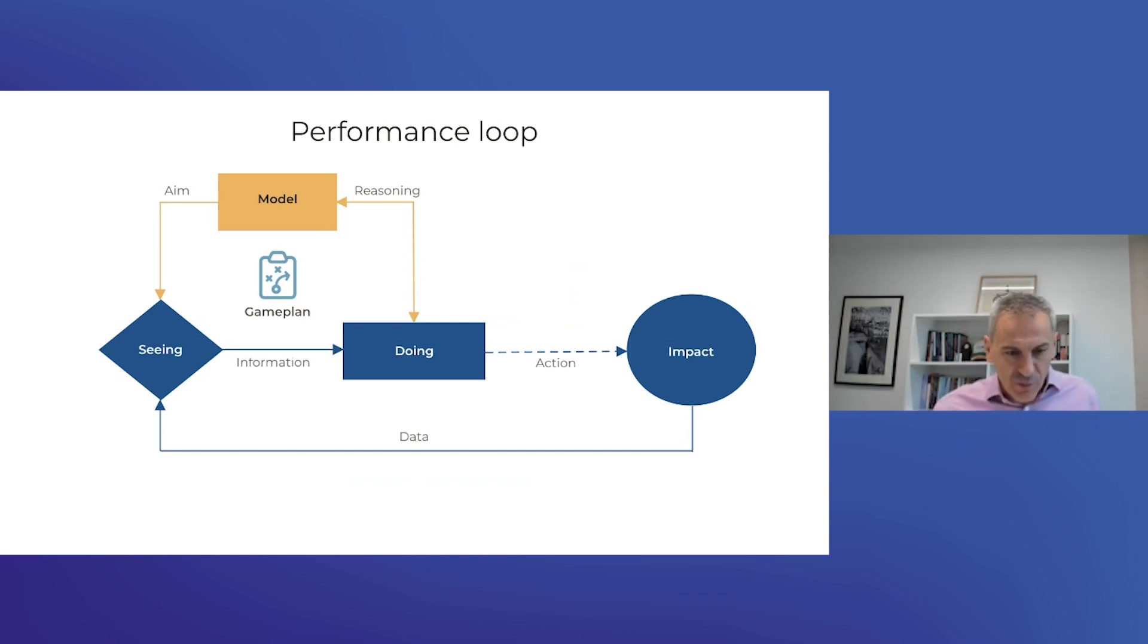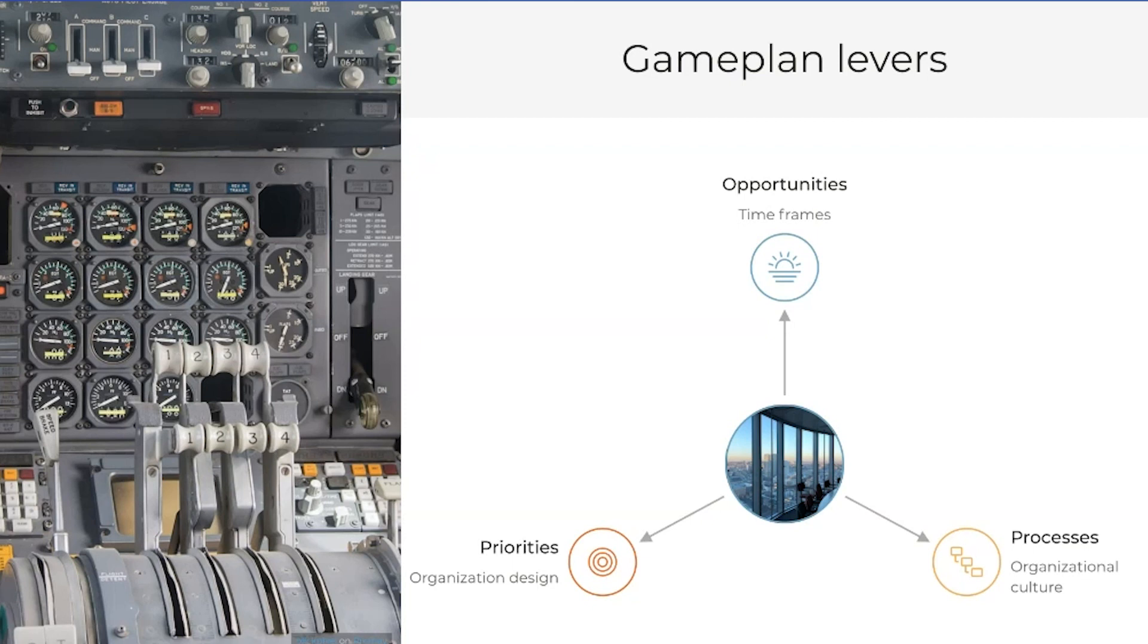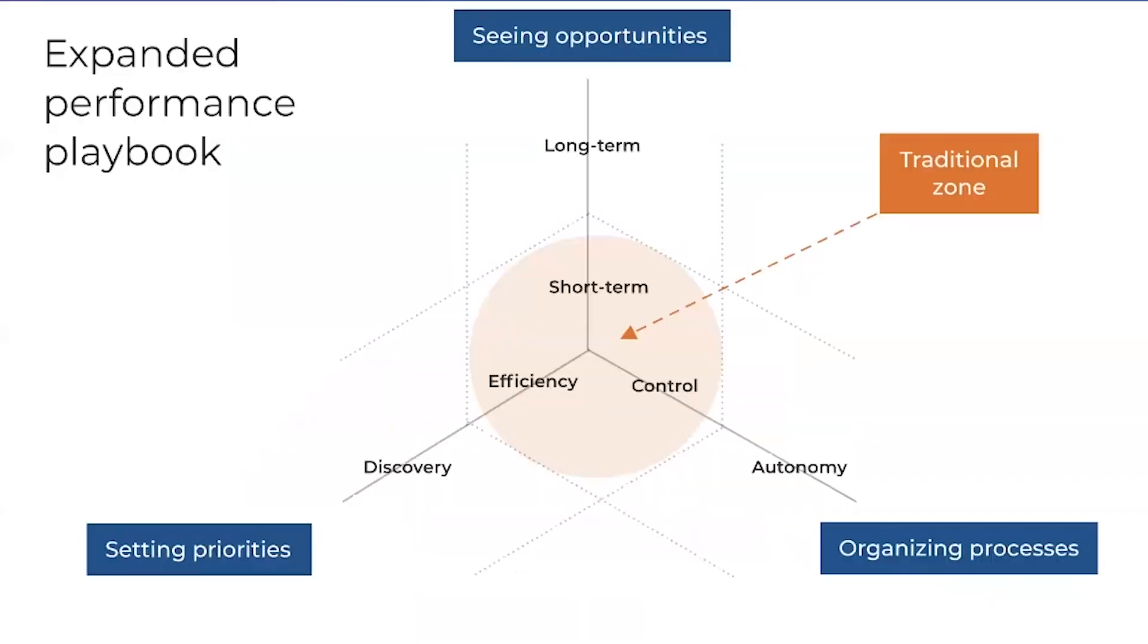There are three things in our organization that we can actually shift and have control over. If we put them on a 3D map, we can see this very powerful combination in the middle, which I would call the traditional zone of performance.